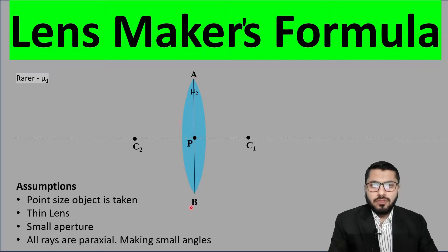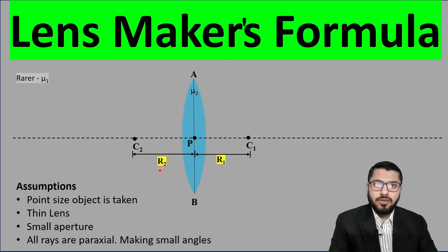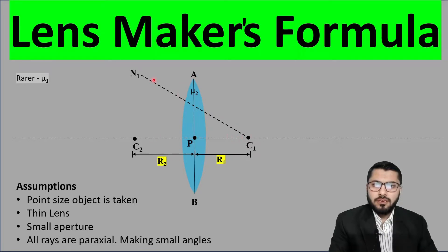These are the two centers of curvature. For the first curved surface, the center of curvature is C1 and the radius of curvature is R1 — the distance from optical center P to C1. For the second curved surface, the center of curvature is C2 and the radius of curvature is R2 — the distance from P to C2. I have also drawn the normals from C1 and C2 for each surface.